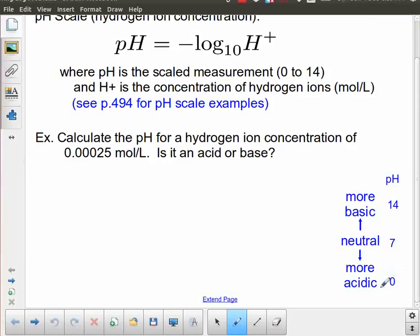In this case, we want to know what is, we're given a hydrogen ion concentration of 0.00025 moles per liter, and we're asked whether or not this is an acid or a base. This is just a simple substitution. My pH value for this is negative log base 10, we don't have to write that base 10, sometimes I write it and sometimes I don't, of 0.00025.